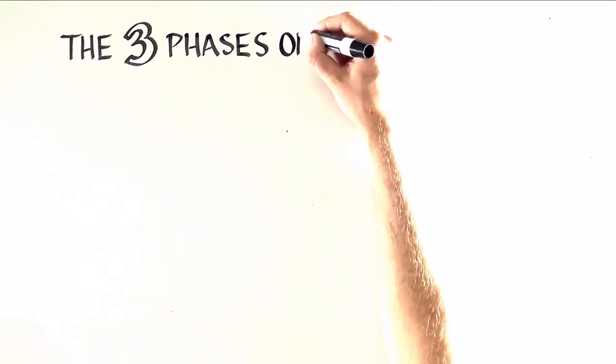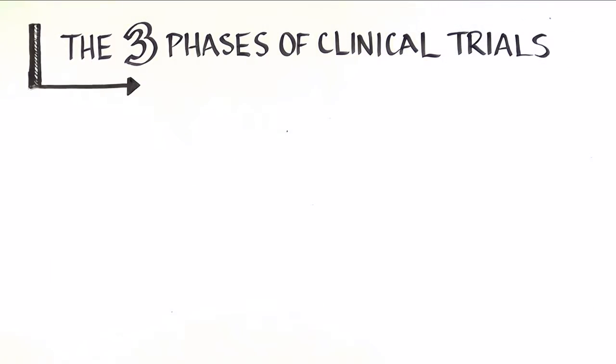Before a vaccine is licensed by the US Food and Drug Administration, it usually goes through three phases of clinical trials, each of which has a specific purpose.